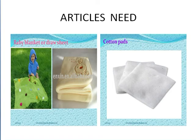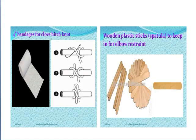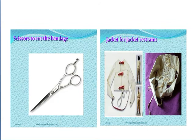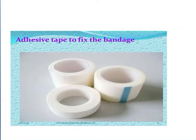Articles needed for restraint: first, a blanket and draw sheet; next, cotton pads; next, bandage; next, wooden or plastic sticks; next, scissors to cut the bandage; next, a jacket for jacket restraint; and next, adhesive tape.